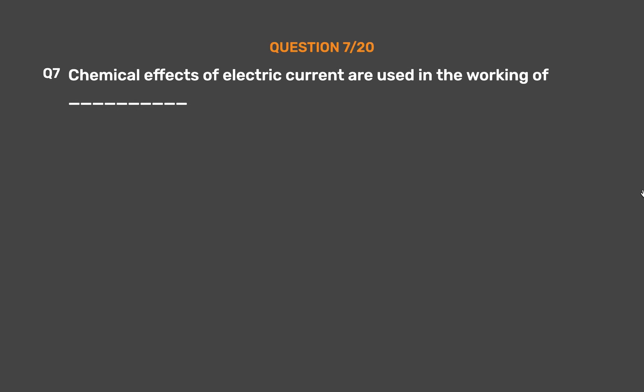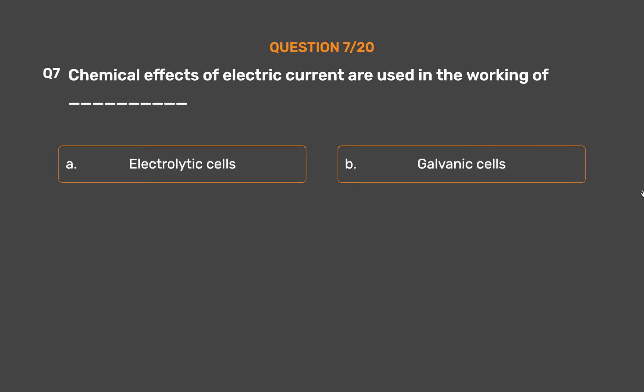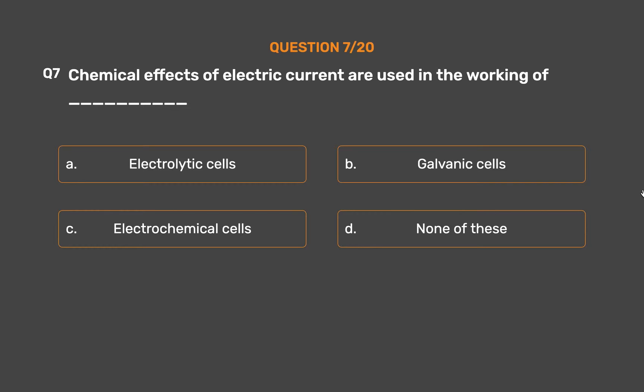Question No. 7: Chemical effects of electric current are used in the working of underscore. Option A: Electrolytic cells. Option B: Galvanic cells. Option C: Electrochemical cells. Option D: None of these.